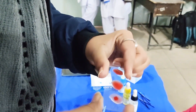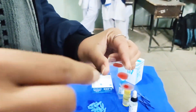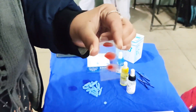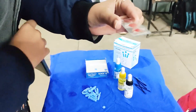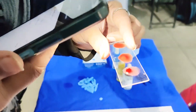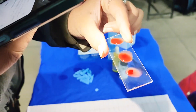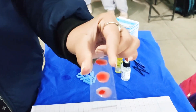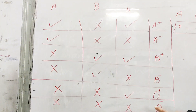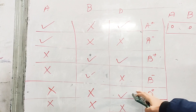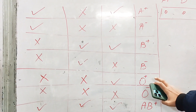Clumping means that clots are made in the drop. The anti-sera reacts and the blood forms clots completely. We observe that only D has clumping — A and B do not. Looking at the table: if only D shows clumping, the blood group will be O positive.